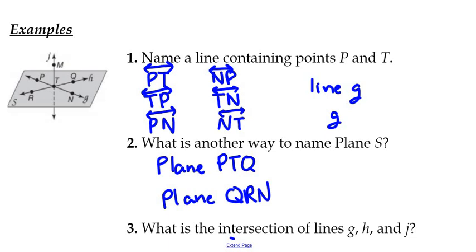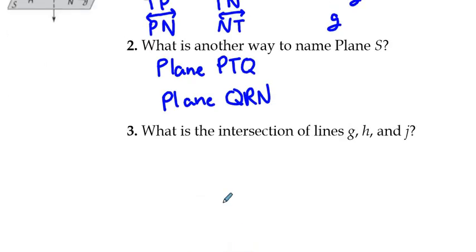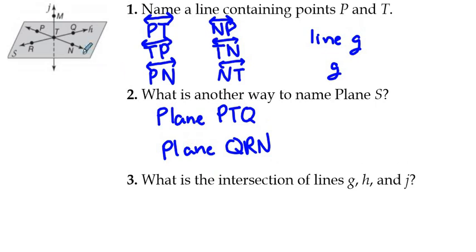And then the last question for this diagram here is what is the intersection of lines G, H, and J? Well, line G and H intersect at point T. Line J intersects those two at point T. So the intersection of lines G, H, and J is at point T or just T.